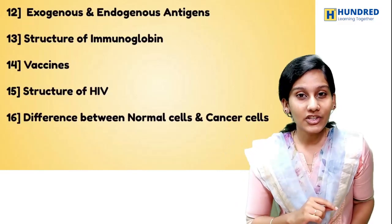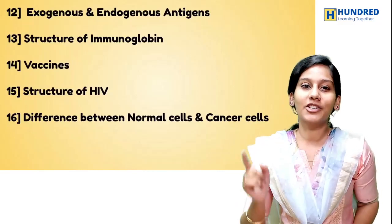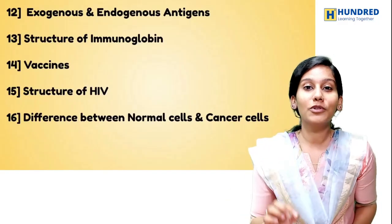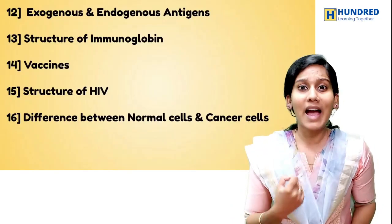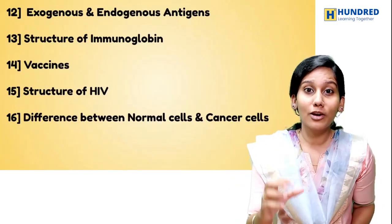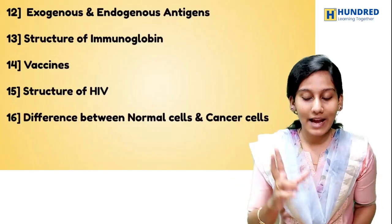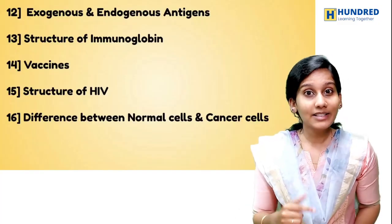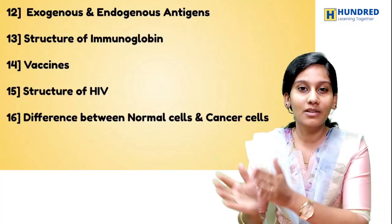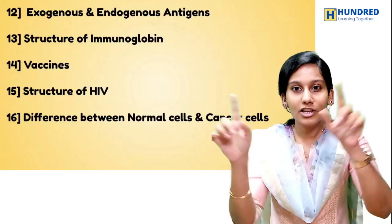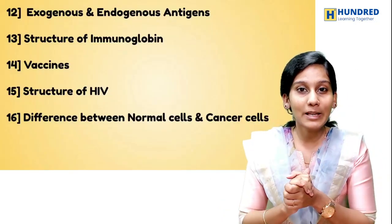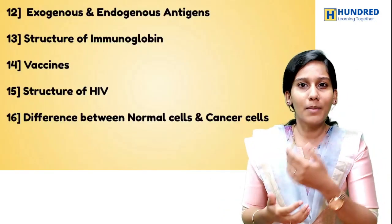Also bone marrow, and the difference between antigen and antibody. Next, antigens — types of antigens: exogenous and endogenous antigens. That is the immunoglobulin structure, which is nothing but the antibodies. The structure description along with the diagram is very, very important. Then the vaccines: first generation, second generation, third generation — if you have a flowchart it will be very neatly presented and we can score these marks.